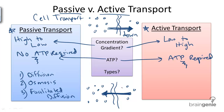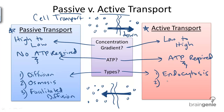Think about it as a river. If you are flowing downstream, it doesn't take too much energy for that water to move down. But if you are moving upstream, think about how much more difficult it is to paddle if you are in a boat. The types of active transport, different from passive transport, include endocytosis, exocytosis, and a transport pump.